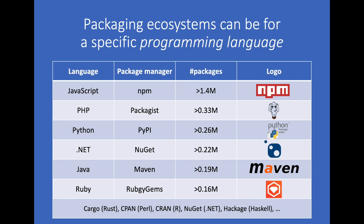One of the most prominent types of packaging ecosystems available today is those for specific programming languages. Any well-known programming language today — Java, JavaScript, PHP, .NET, Ruby, and many others — has its own package manager hosting thousands, hundreds of thousands, or millions of different packages. NPM is by far the largest of these package managers, with today over 1.4 million packages being hosted in it.